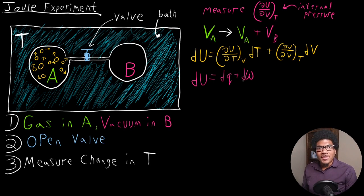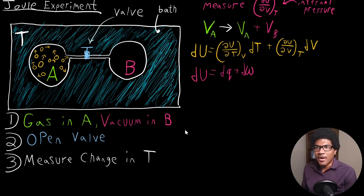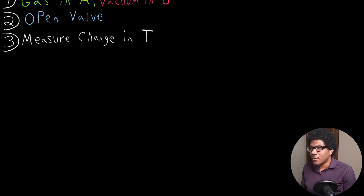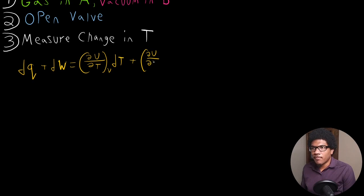So what we can do is set these two expressions equal and start to see what happens with our expression and how we can isolate the internal pressure based on the conditions of our experiment. So we have dU is equal to dQ plus dW, and that's going to be equal to ∂U/∂T at constant V times dT plus ∂U/∂V at constant T times dV.